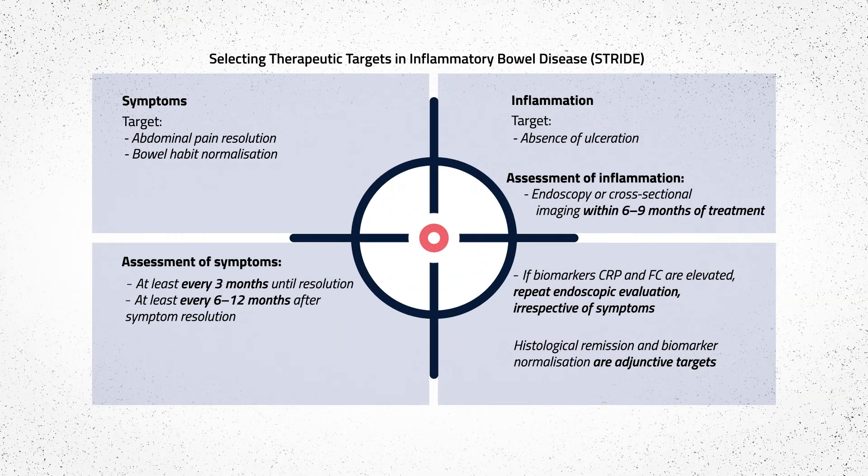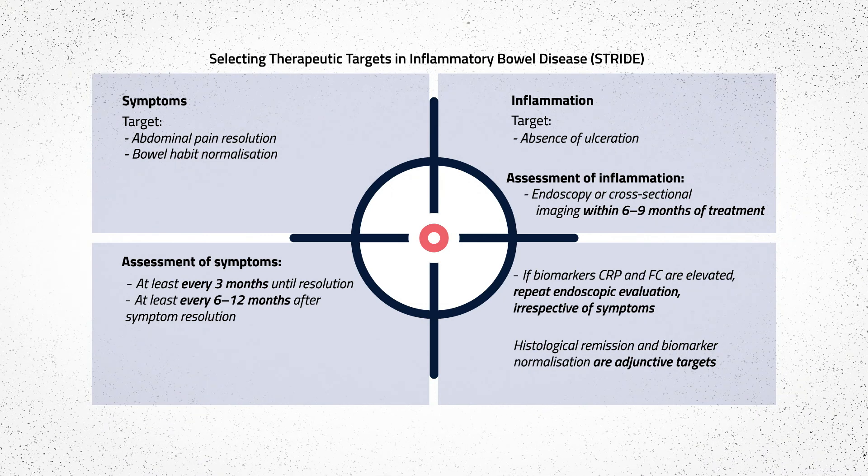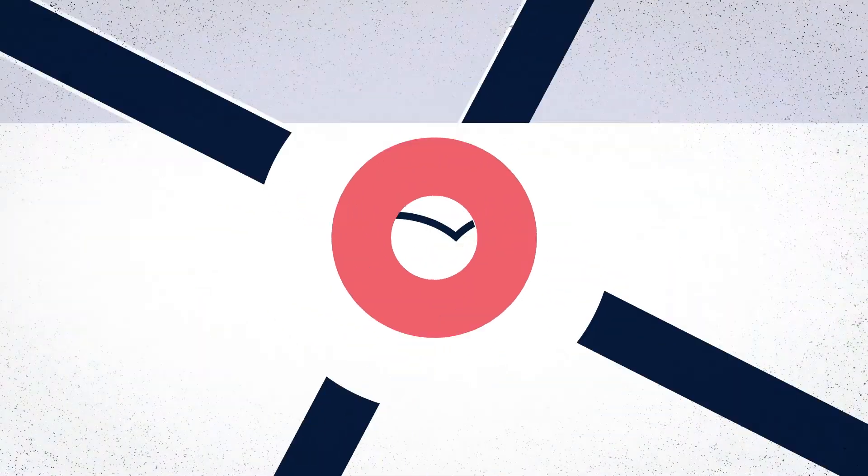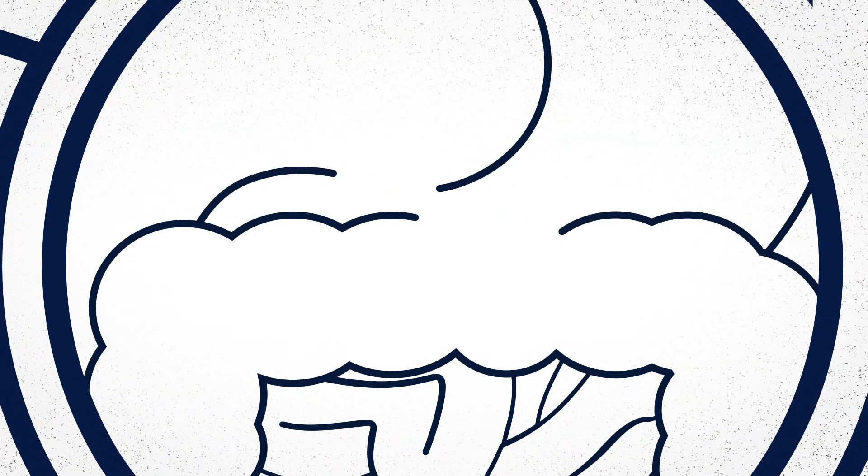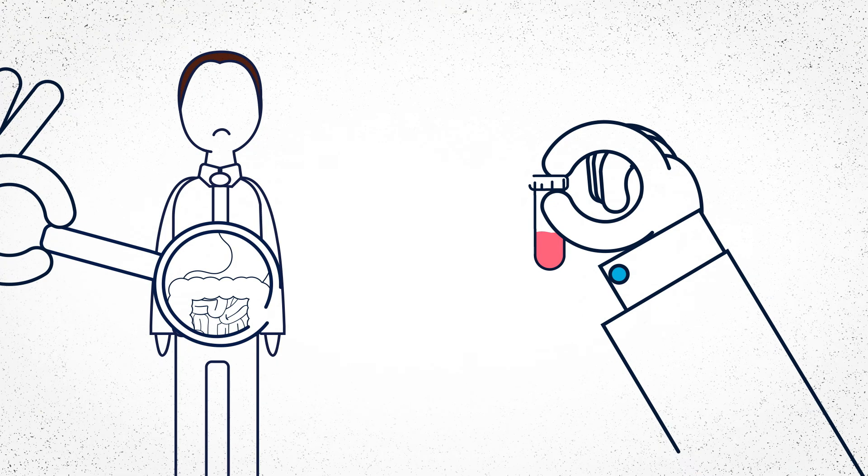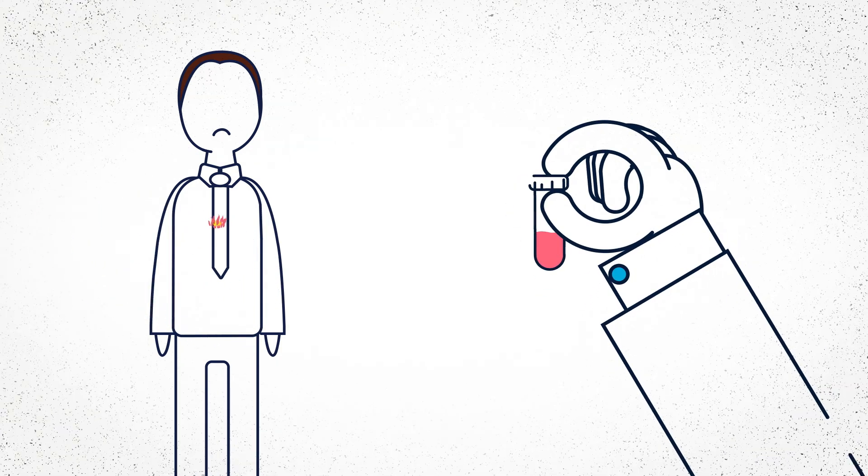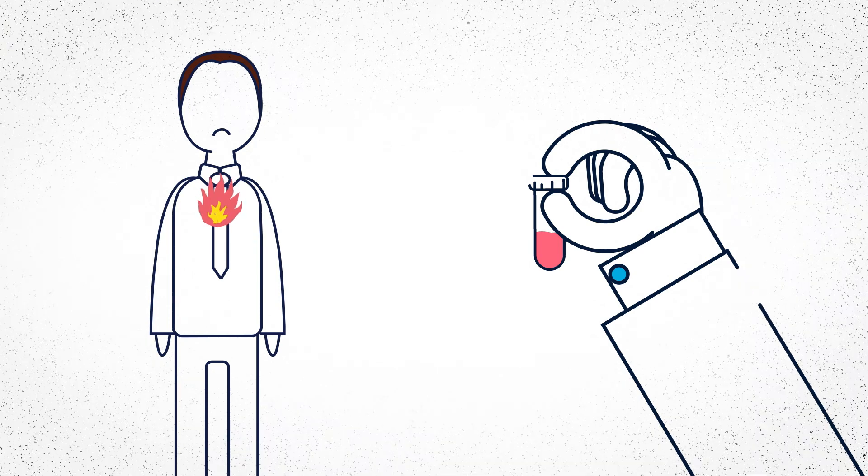The STRIDE initiative has defined recommendations for selecting and assessing treatment targets in IBD. When it comes to monitoring markers of gut inflammation, CRP is the most accurate blood marker. However, it is not gut specific and will be elevated with an infection or inflammation elsewhere in the body.